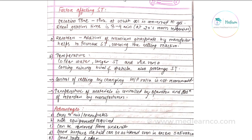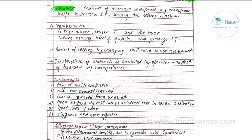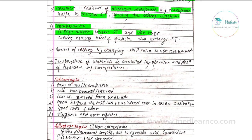Factors affecting setting time: the gelation time is the time at which the sol is converted into the gel form. The ideal gelation time is 3–4 minutes at 20°C room temperature. Retarder: addition of trisodium phosphate by the manufacturer slows the setting reaction. Temperature: colder water results in a longer setting time, and vice versa. Cooling the mixing bowl and spatula also prolongs setting time.